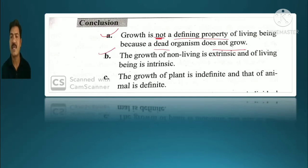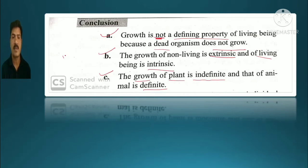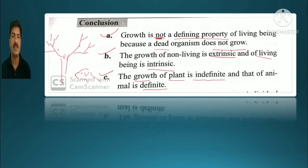The growth of non-living is extrinsic and living is intrinsic. The growth of plants is indefinite and that of animals is definite. A plant keeps growing throughout its life — branches grow in indefinite directions — while an animal has a proper shape and definite growth pattern.